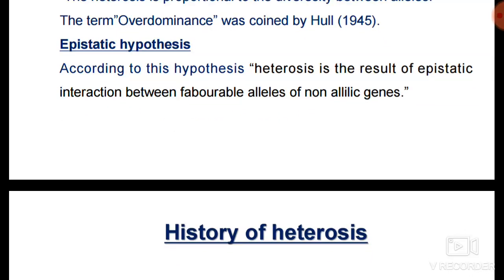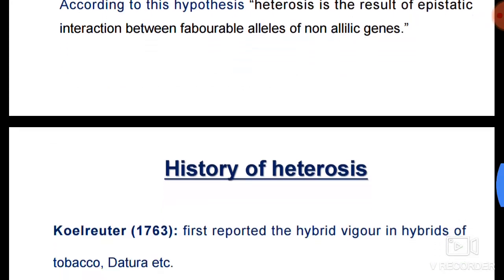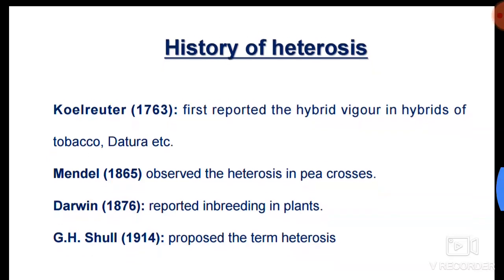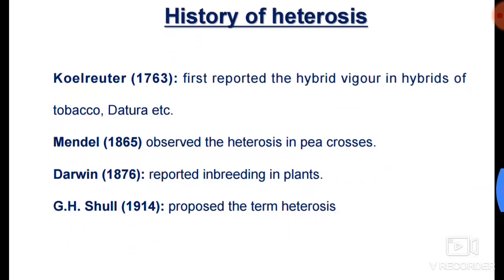The third is the epistatic hypothesis. According to this hypothesis, heterosis is the result of epistatic interaction between the favorable alleles of non-allelic genes. It involves the interaction between favorable alleles of non-allelic genes.